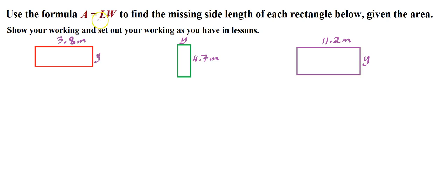So, use the formula A equals LW, so length times width, to find the missing side length of each rectangle below, given the area. So we're going to be given the area for each of these problems. Let's solve. So we'll use this formula, A equals length times width.